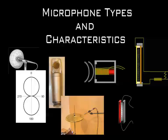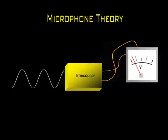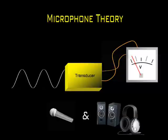But first, let's have a look at the basics of how a microphone works. Devices that convert a mechanical or rather measurable energy into an electrical one, or vice versa, are called transducers. Examples of transducers are microphones and loudspeakers. Microphones are transducers that convert mechanical energy — the sound — into electrical energy: voltage or current.